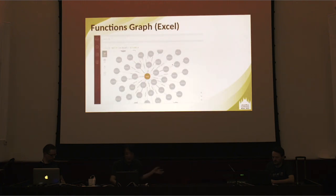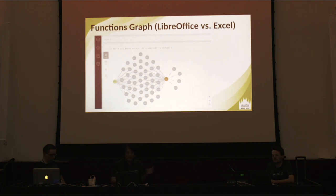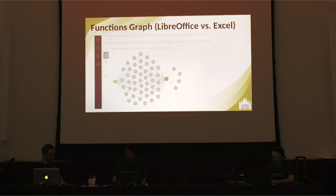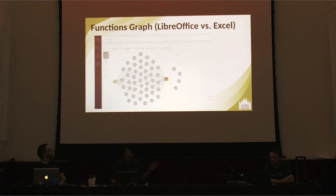This is the Excel graph here, and this is the LibreOffice graph here. The green ones are LibreOffice functions from A to B. Orange is the Excel function — the Excel function is a formal function. You will see a formal mapping. There are six same functions but four different functions. It's easy to find the function.